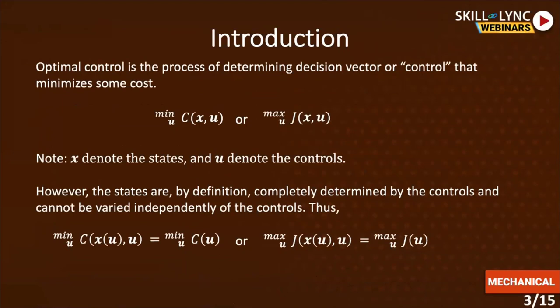Optimal control by definition is the process of determining a decision vector — a control — that minimizes some cost. The notation we use is minimization of a function C, which is a function of x, the state vector, and u, the controls, minimized over the control vector. However, the states are by definition completely determined by the controls and cannot be varied independently of the controls.